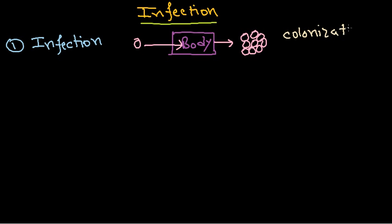This colonization will result in damage to host cell tissue. This kind of infection problem is most commonly seen in our skin, but infections in the GI tract and other regions are caused by some other mode of Staphylococcus activity, which is the second mode.